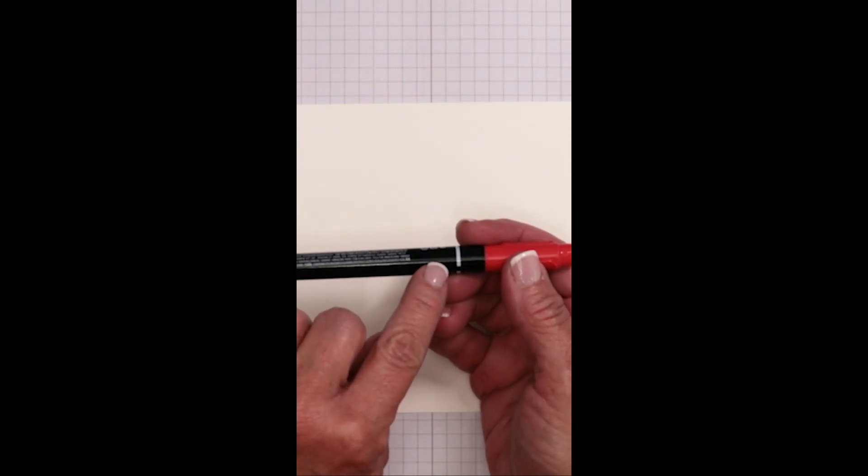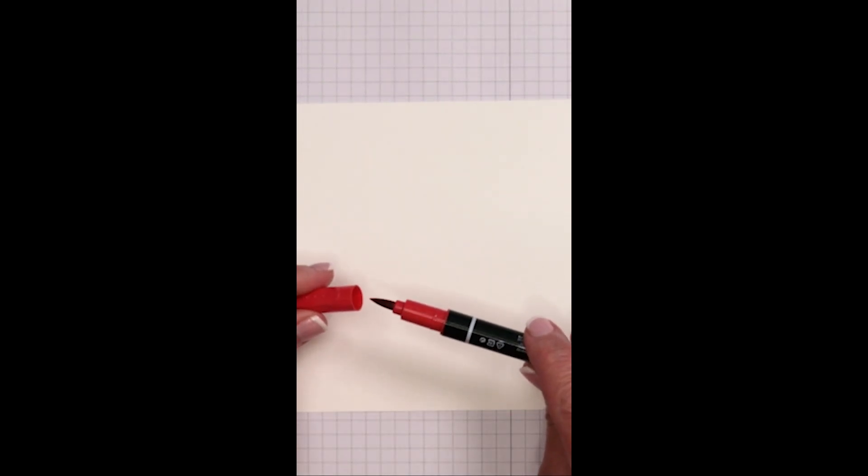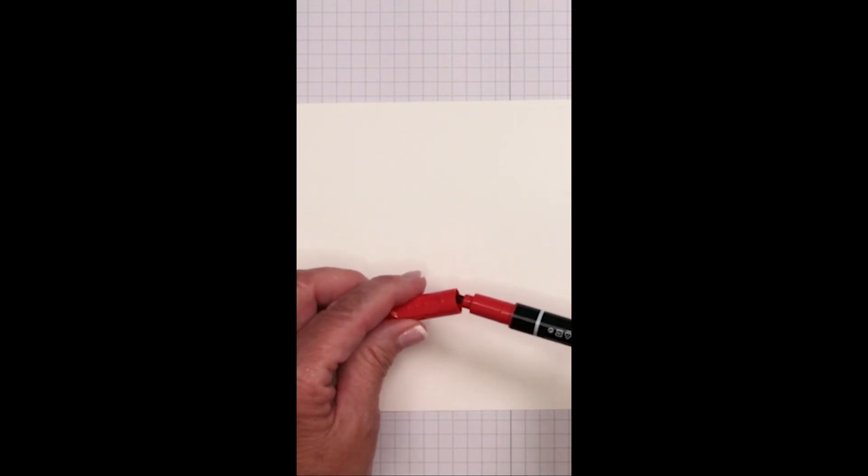What you're going to want to do is use the thick end of the Stampin' Write marker. You're going to hold it over your cardstock, position the tip of the marker just inside the lid and you're going to flick.